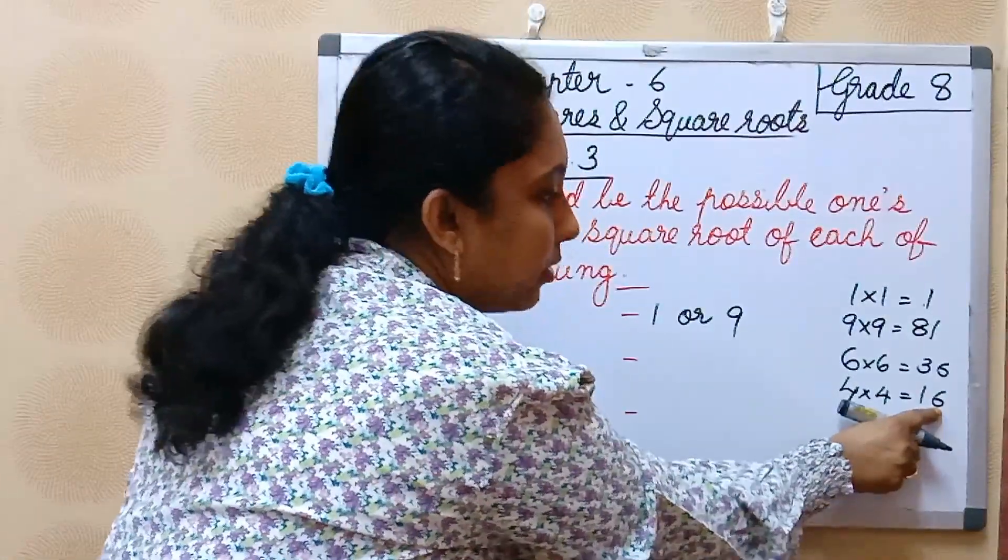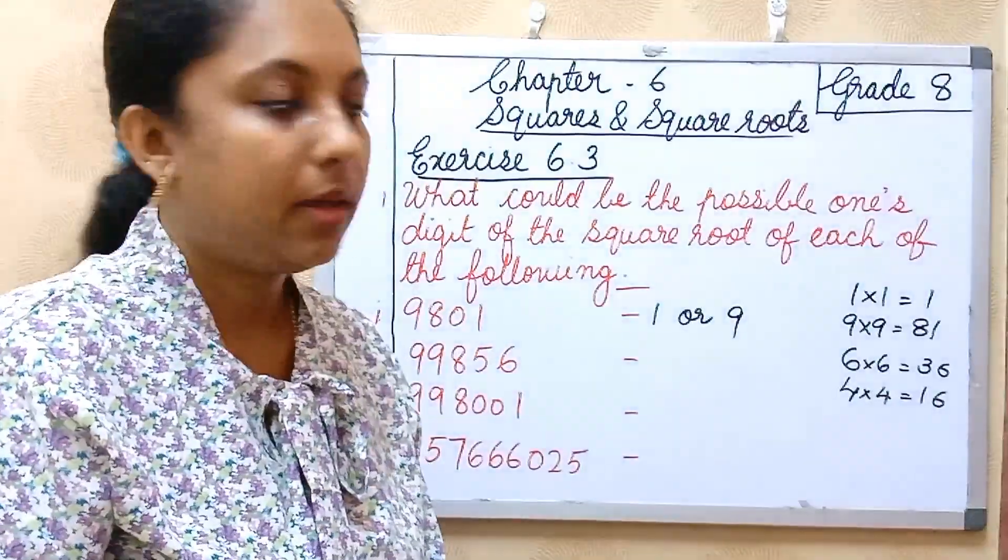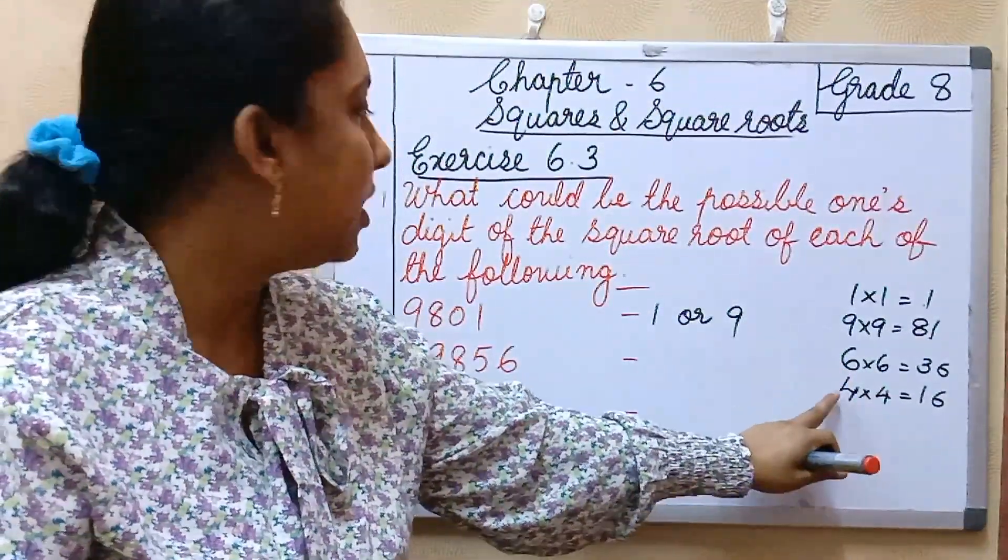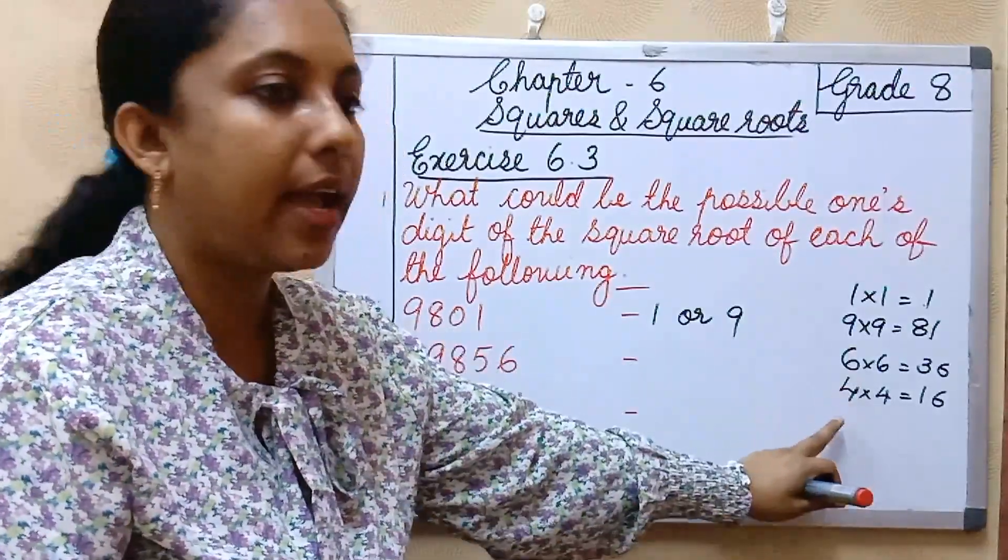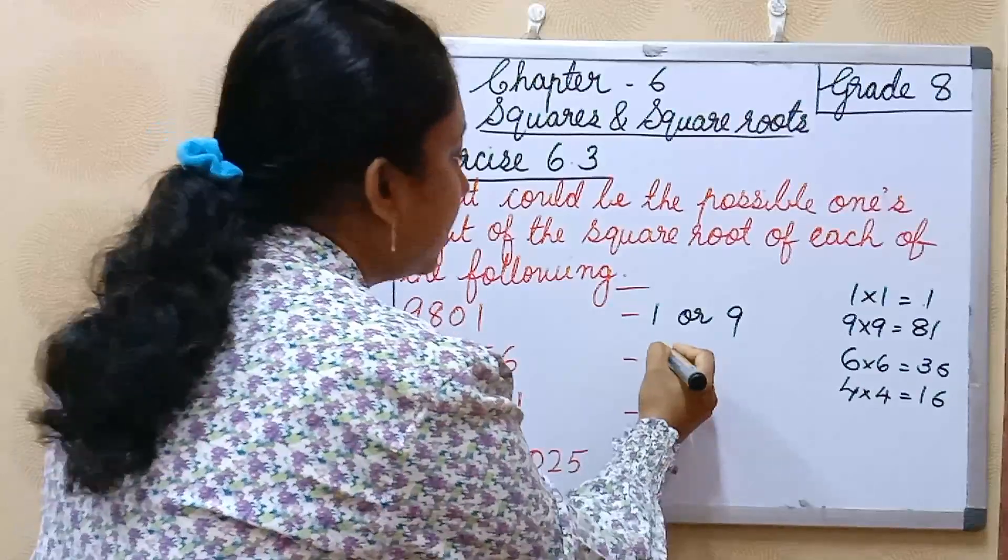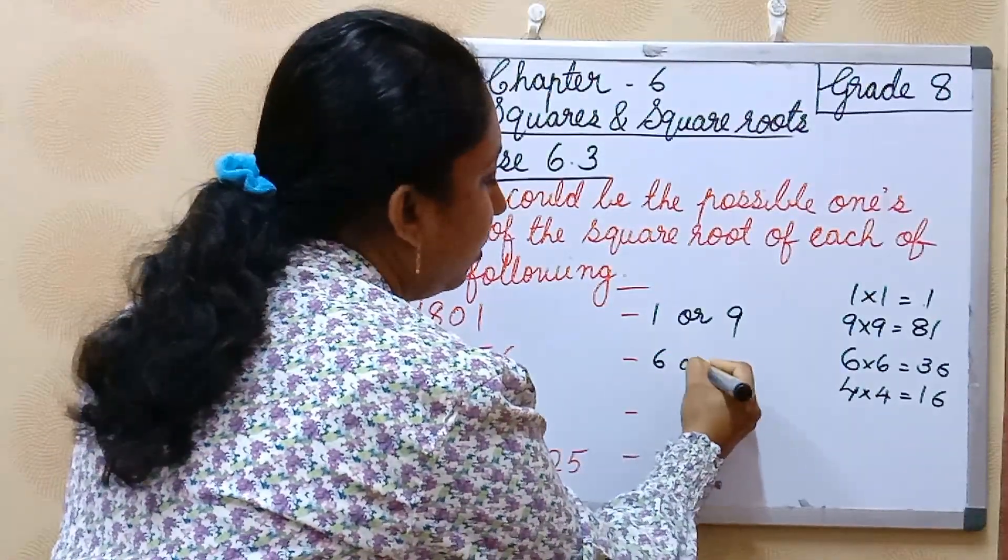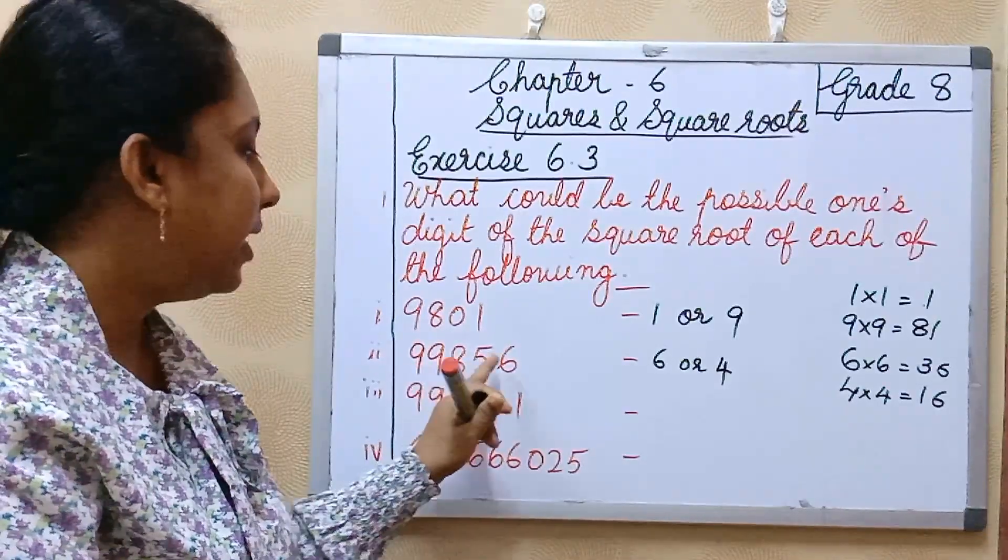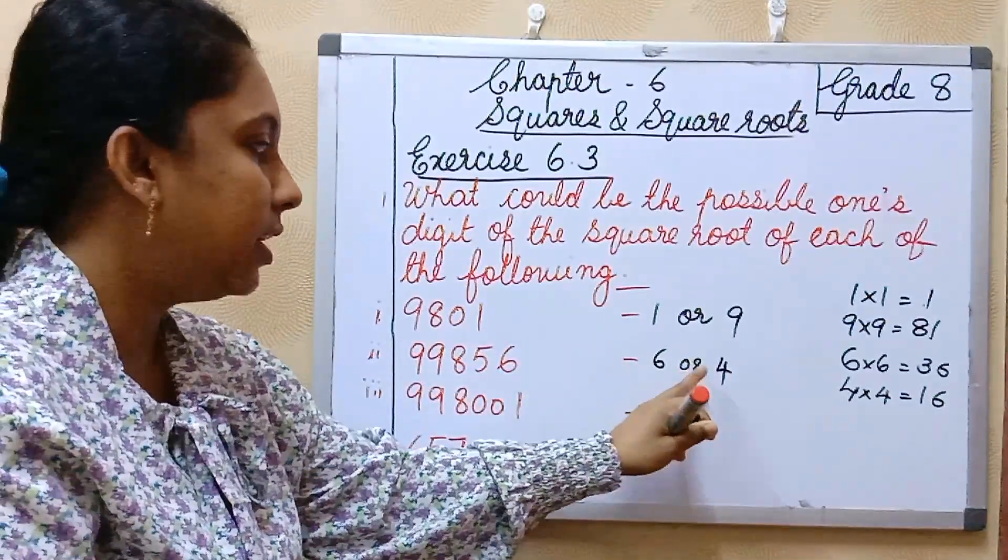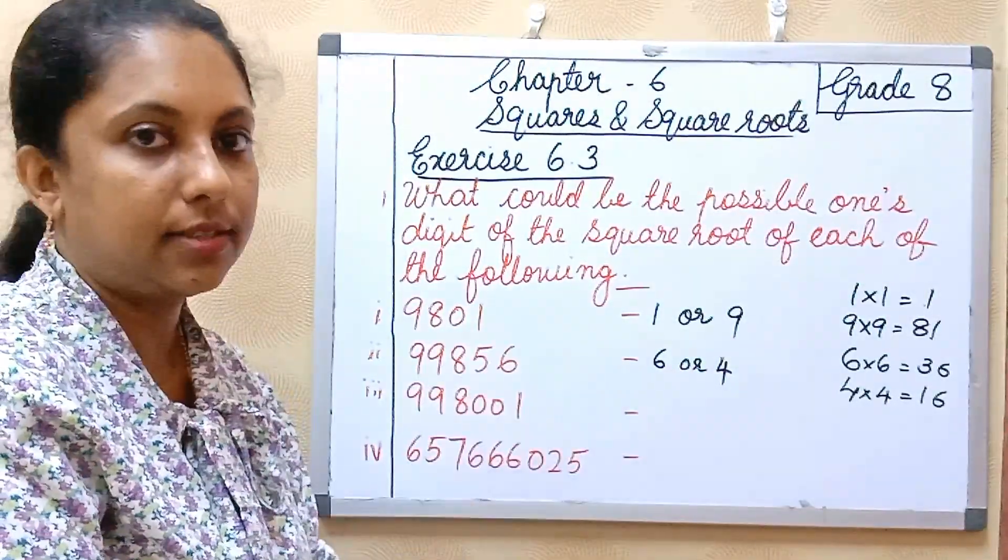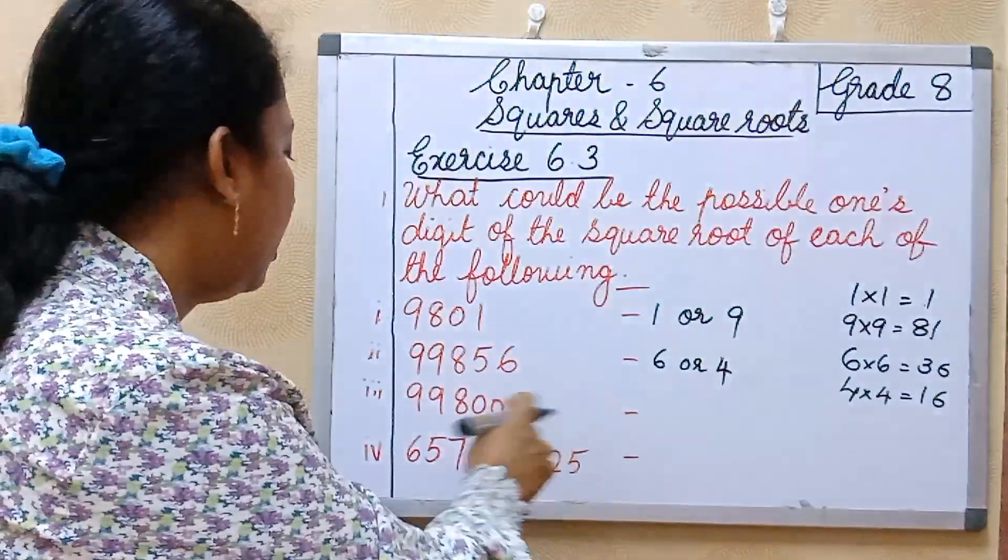That is 6 into 6 is equal to 36, here also ending digit is 6. Then 4 into 4 also 16, that square number also ending digit is 6. So only 2 possibilities, possible ones digit, that is 6 and 4. So here we can write 6 or 4. The square root of 99,856, ones digit should be 4 or 6.